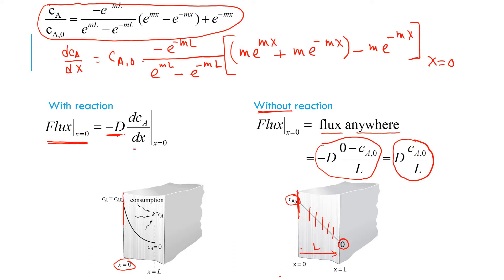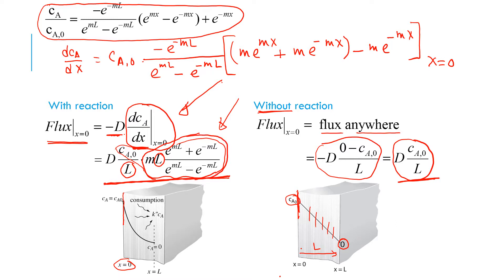Flux at x equal to 0 is minus D·dC_A/dx at x equal to 0, which gives this quantity where I divided and multiplied by L. This is my flux with reaction, whereas without reaction this was my flux. For this flux to be higher, this ratio has to be greater than one.